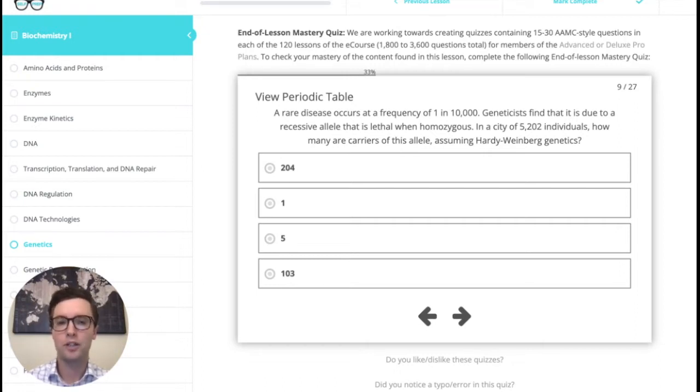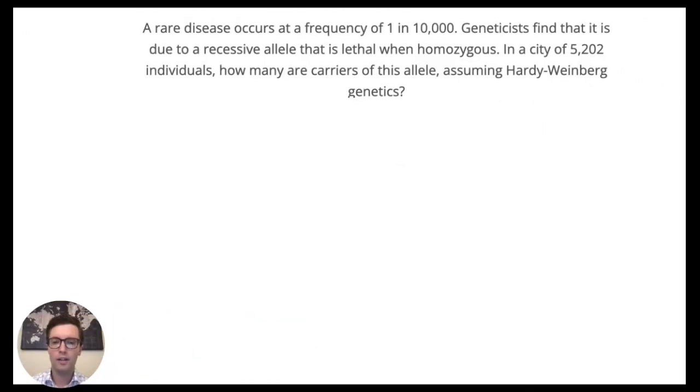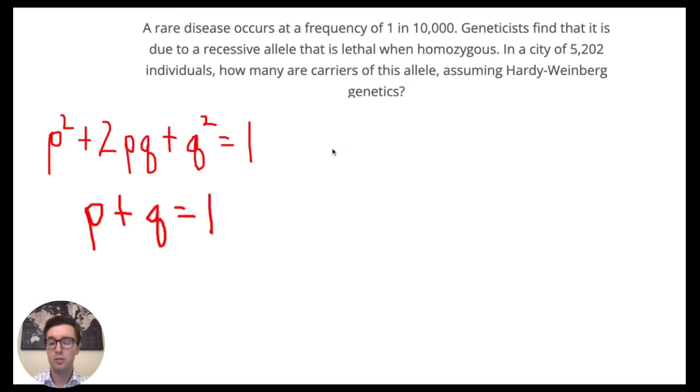In order to answer this question, we're going to first need to understand the math behind Hardy-Weinberg genetics, and second, we're going to need to be able to do that math in our heads. Now the most important thing to remember when solving any Hardy-Weinberg problem is to memorize the two equations: p² + 2pq + q² = 1 and p + q = 1, where p is the frequency of the dominant allele and q is the frequency of the recessive allele.